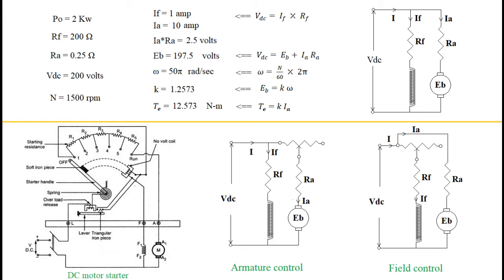Converting the speed of 1500 rpm to radians per second gives 50π. The constant connecting speed and back EMF is 197.5 divided by 50π, which equals 1.2573. We symbolize this constant as k. Using this constant, we find torque as k times Ia. Substituting Ia equals 10 amperes gives torque as 12.573 newton-meters.